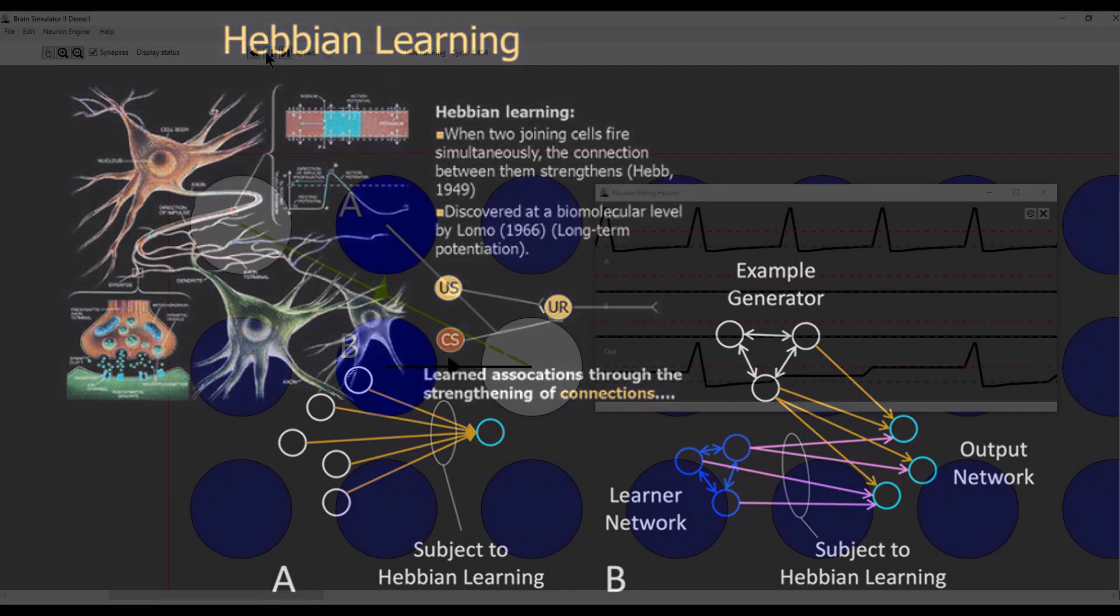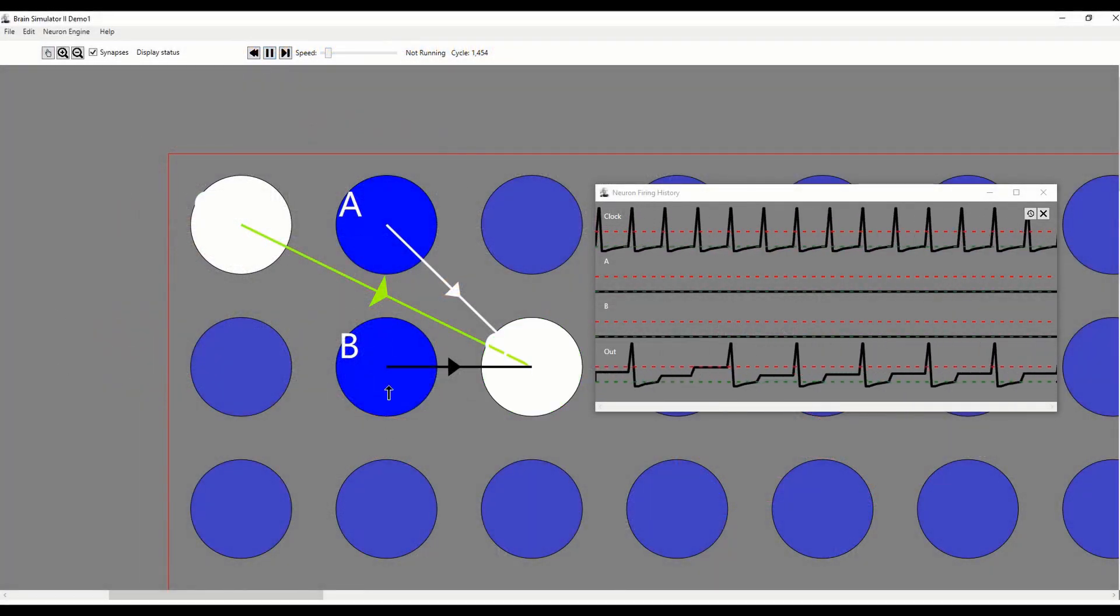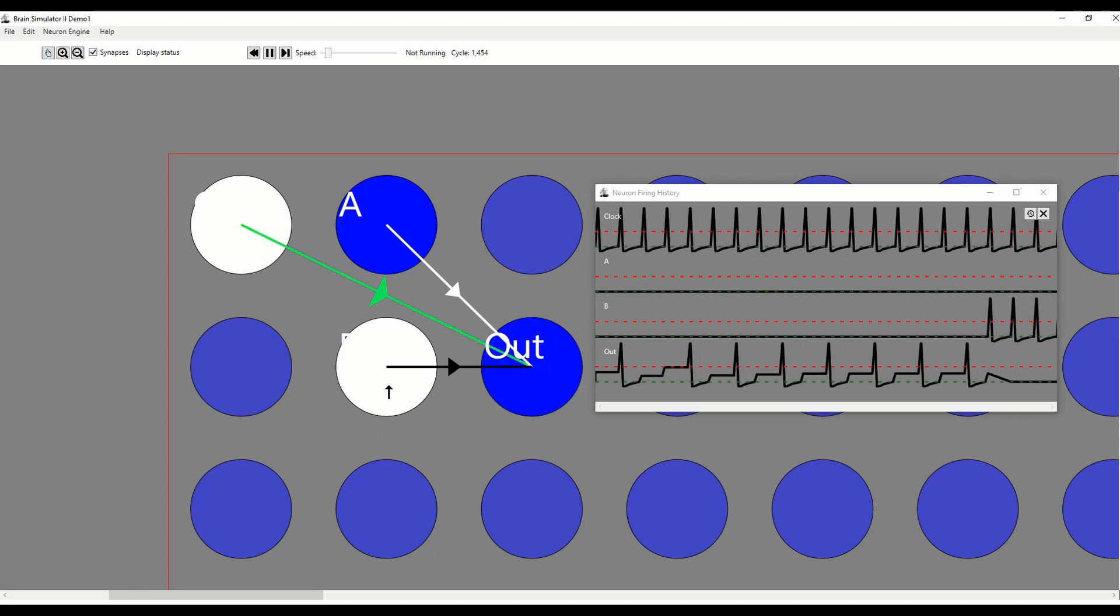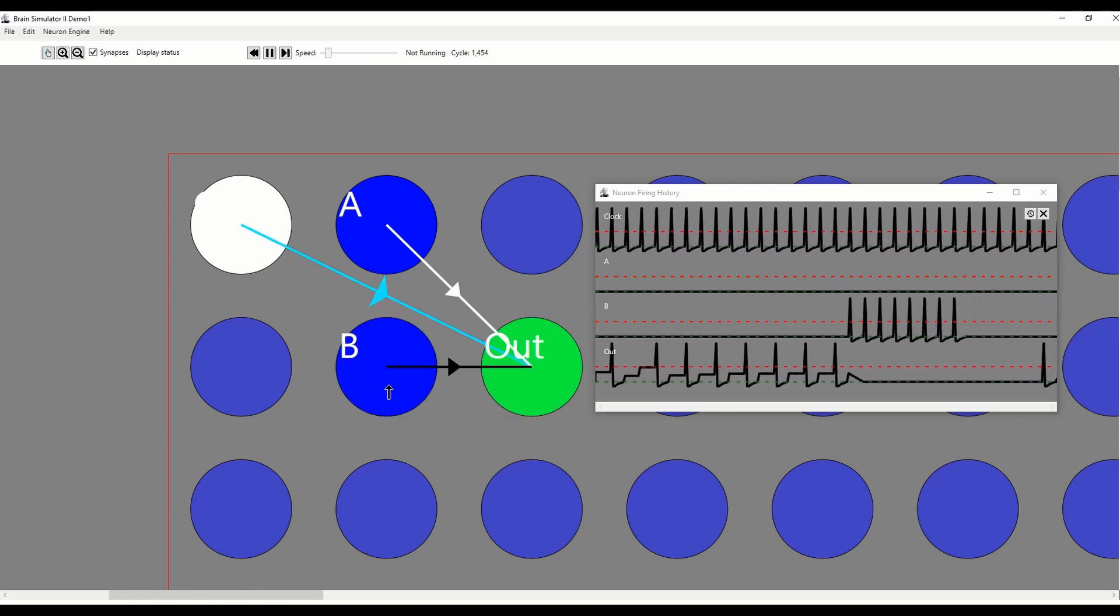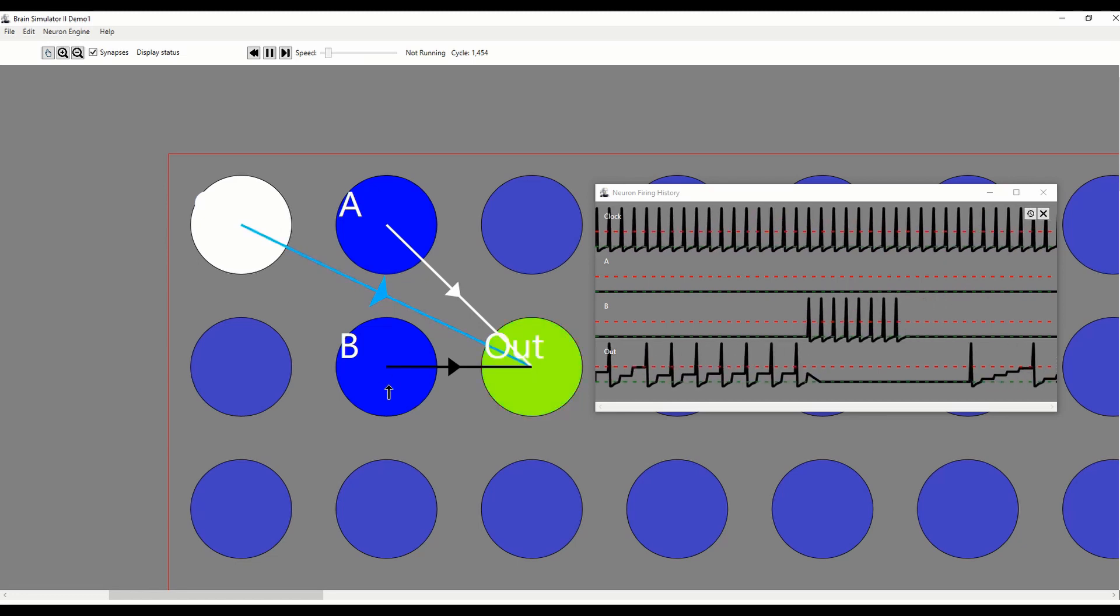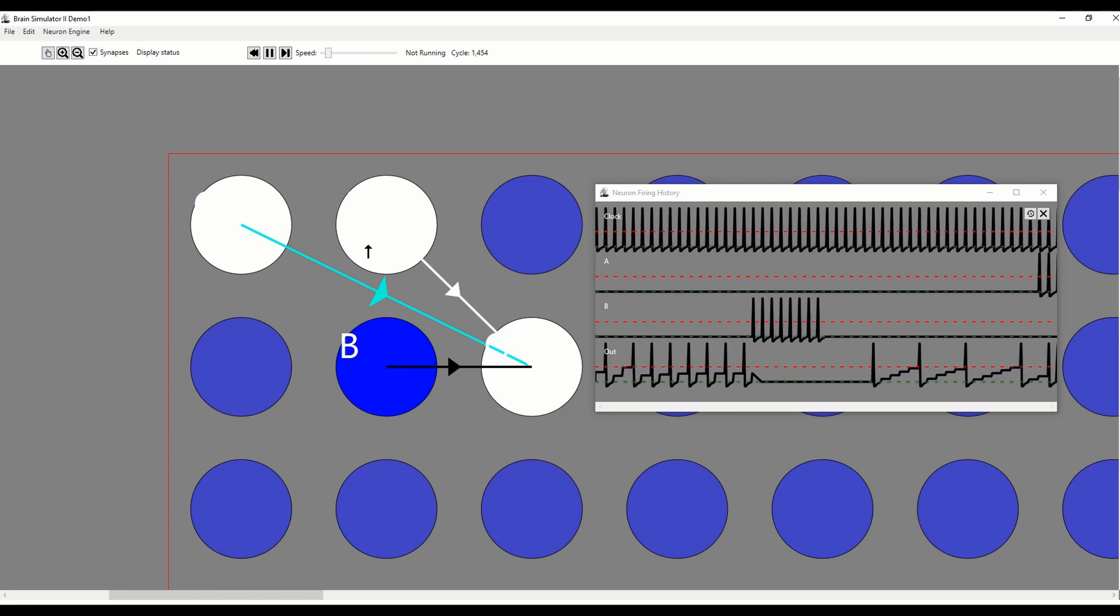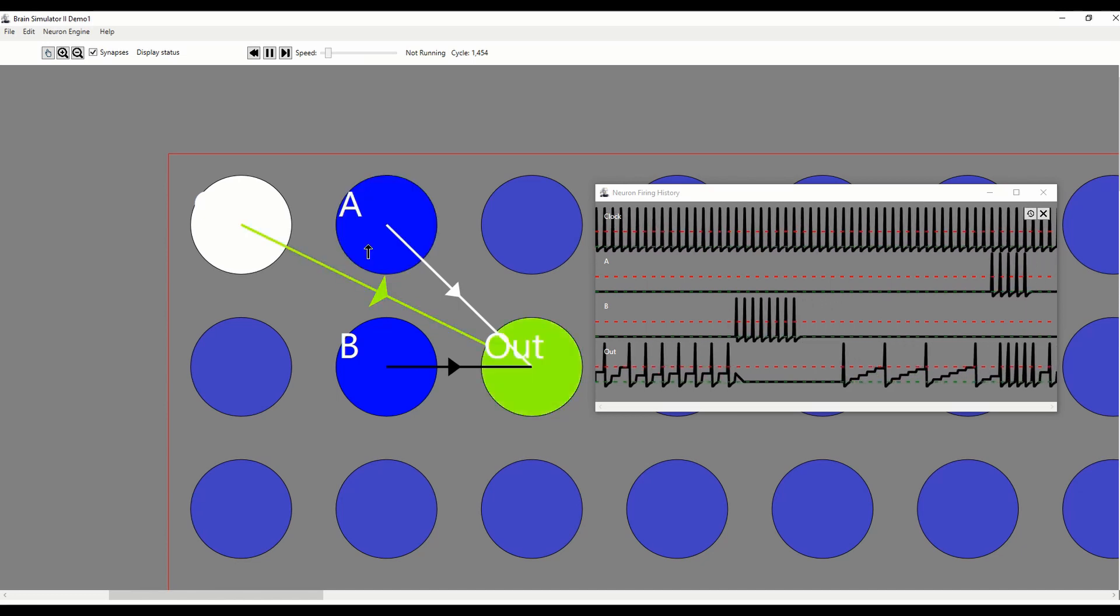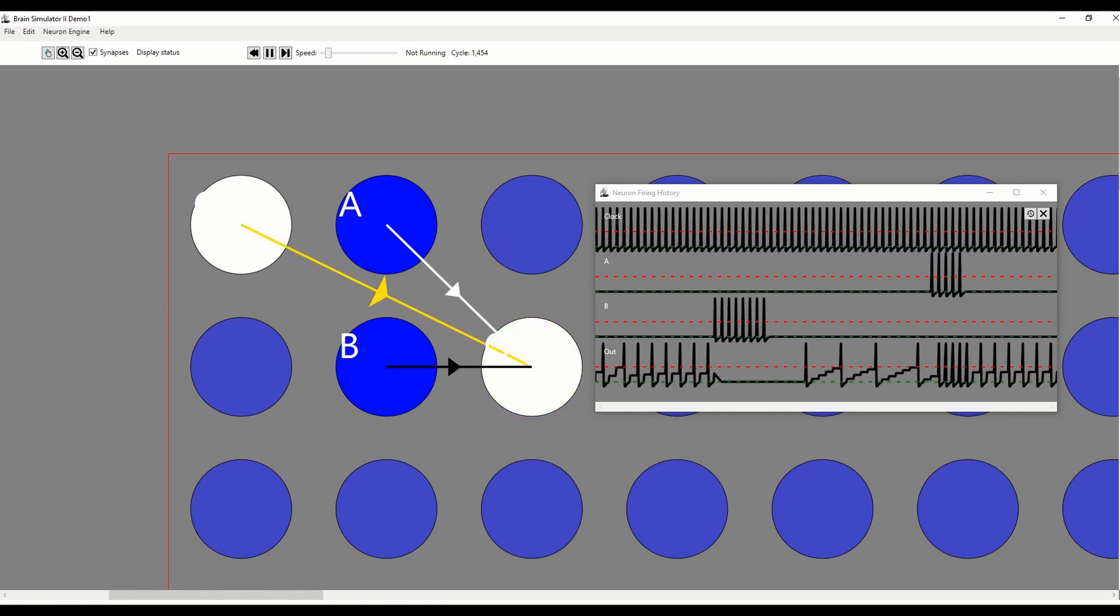In this example, with clock connected to out with a learning or Hebbian synapse, if we fire B to suppress the firing of out, the synapse weight will be lowered and you can see that out now fires slower. If we fire A to stimulate the firing of out, the weight will increase and you can see that out now fires faster.